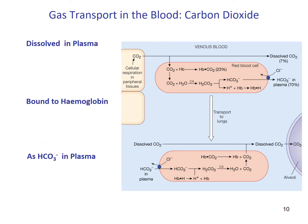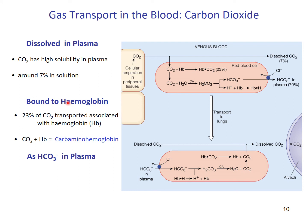We will now talk about the transport of carbon dioxide across the bloodstream. Carbon dioxide can be transported in 3 ways: dissolved in the plasma, bound to hemoglobin, or transported as bicarbonate ions within the plasma. Roughly 7% of CO2 is dissolved in plasma due to carbon dioxide's high solubility in water. About 23% of CO2 is transported by hemoglobin — when dissolved CO2 diffuses into red blood cells, it can bind to hemoglobin, forming carbaminohemoglobin, in a reversible process.